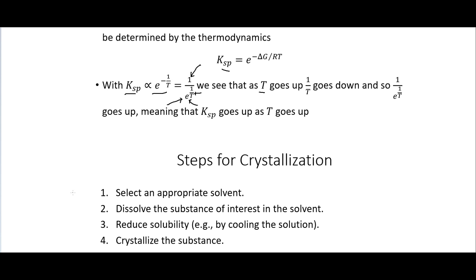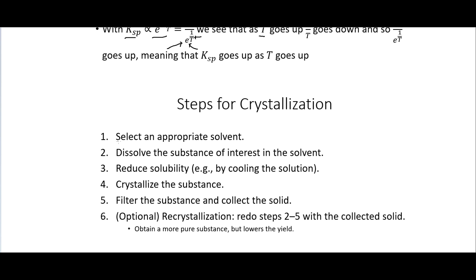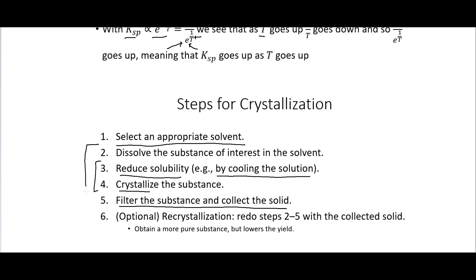So these are the steps for crystallization in a little more detail. First, select an appropriate solvent — one that will dissolve the substance at a high temperature but not at a low temperature. Then dissolve the substance of interest in the solvent and reduce the solubility, commonly by cooling. Then crystallize the substance, filter and collect the solid, and optionally do recrystallization by redoing steps two through five with the collected solid to further purify it, though this will lower the yield.